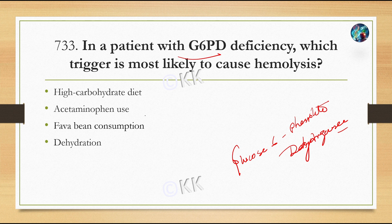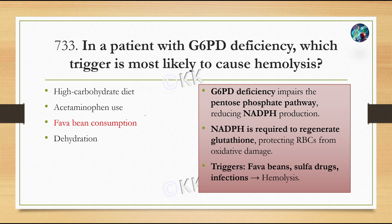Fava beans, sulfa drugs, and similar agents may trigger hemolysis in G6PD deficiency. The process involves NADPH, which is required for regeneration of glutathione. Glutathione protects RBCs from oxidative damage and acts as an antioxidant. Due to G6PD deficiency, the pentose phosphate pathway produces less NADPH, leading to less glutathione regeneration, reduced RBC protection, and ultimately hemolysis triggered by fava beans, sulfa drugs, and infections.